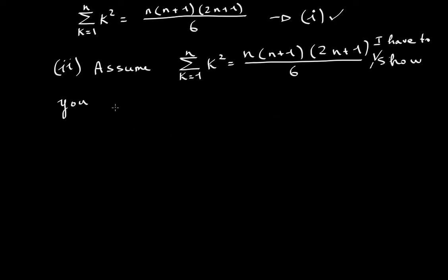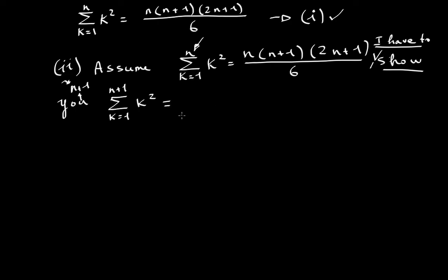I have to show that the sigma starting at K equals 1 going to N plus 1 of K squared equals N times N plus 1 times 2N plus 1 over 6, plus N plus 1. We are ending at N plus 1, so the upper bound becomes N plus 1. To make it a bit more involved: this is equivalent to N times N plus 1 times 2N plus 1, plus 6 times N plus 1, all divided by 6.